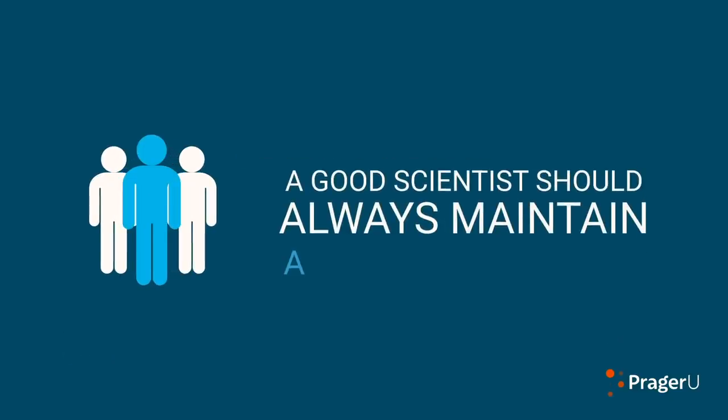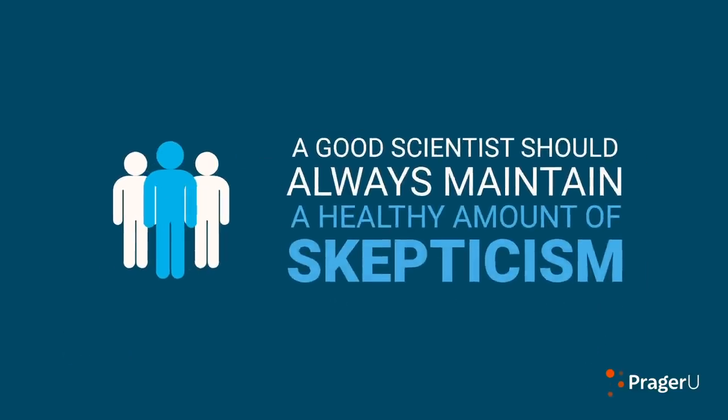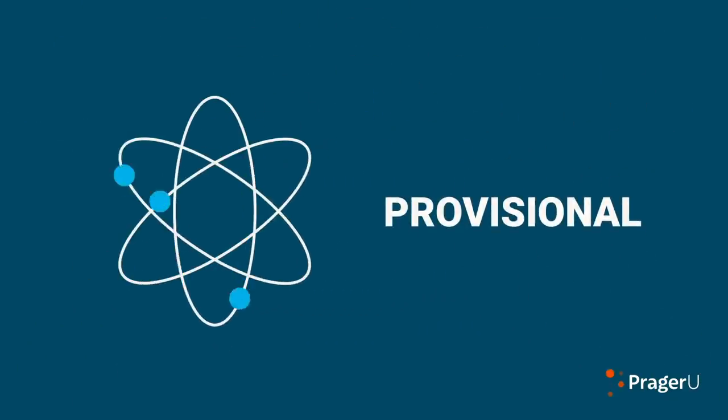Science is the belief in the ignorance of experts. What Feynman is saying is that a good scientist should always maintain a healthy amount of skepticism. Science is by its nature provisional. Science would stagnate if we merely accepted proclamations of past authorities.